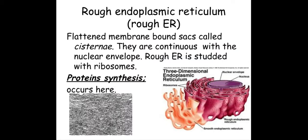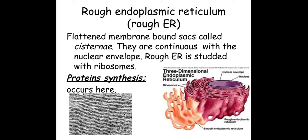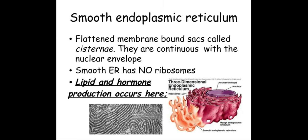The rough endoplasmic reticulum is a continuation of the nuclear envelope and has ribosomes attached to it, which is why you can see these little dots in this transmission electron microscope image. Anything bold and underlined is taken directly from the mark scheme — we need to know that the rough ER is important for protein synthesis, which you'll learn about in more detail when we get onto nucleic acids.